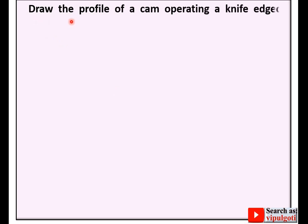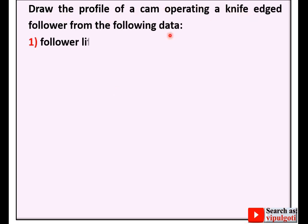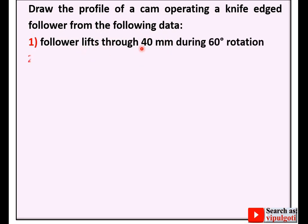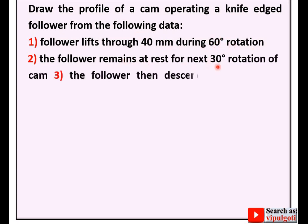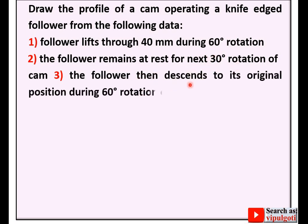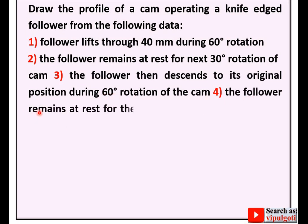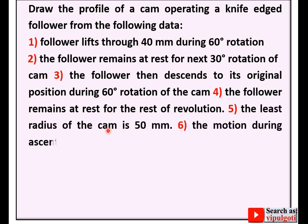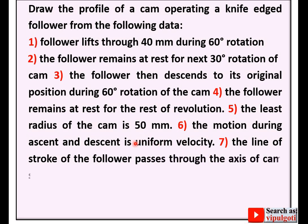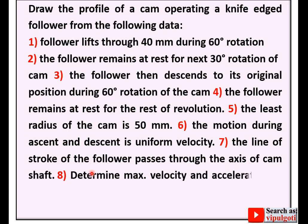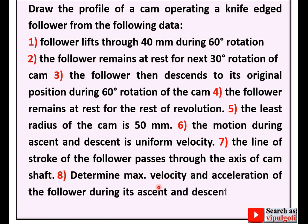Let us see first of all the description: draw the profile of a cam operating a knife-edge follower from the following data. The lift stroke is 40 mm during 60 degree rotation — that means the ascent angle. The follower remains at rest (dwell period), then the follower descends — descent angle is 60 degrees. The follower remains at rest for the rest of the revolution. The least radius is given. The motion during ascent and descent is uniform velocity. The line of stroke of the follower passes through the axis of the cam shaft. Determine maximum velocity and acceleration of the follower during its ascent and descent if the cam rotates at 200 rpm.